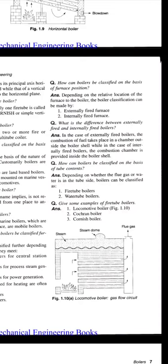How can boilers be classified on the basis of furnace position? Depending on the relative location of the furnace, boilers can be classified as externally fired furnace or internally fired furnace. In externally fired boilers, combustion of fuel takes place outside the boiler shell, while in internally fired boilers, the combustion chamber is provided inside the boiler shell.